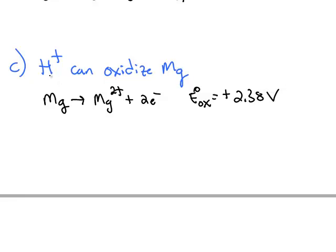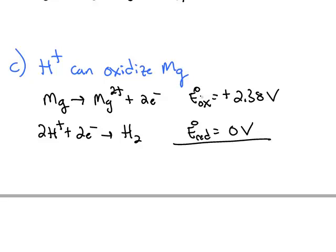The H+ has to be reduced and we can find that in the table. H+ is reduced to hydrogen gas. Standard reduction potential is 0 volts. When you put this oxidation with this reduction, you get a positive cell voltage, which means it's spontaneous. So this statement is true.